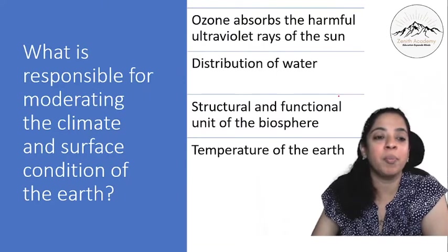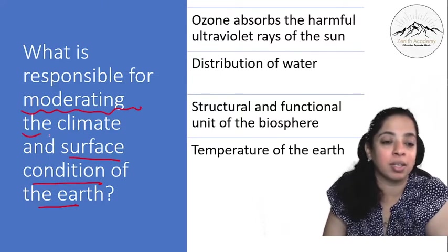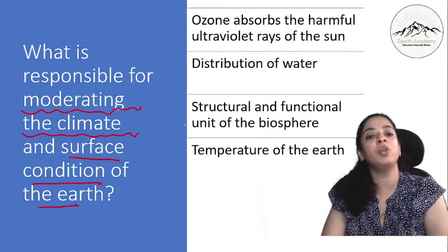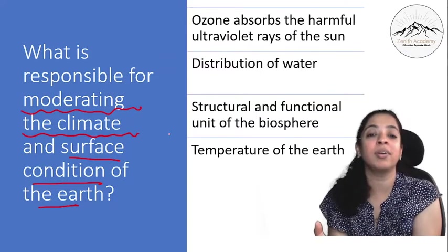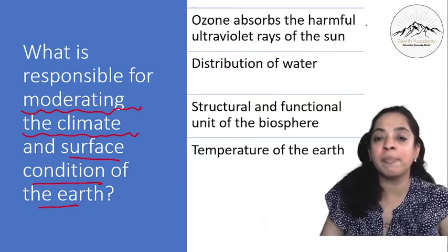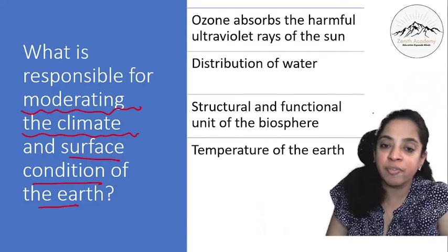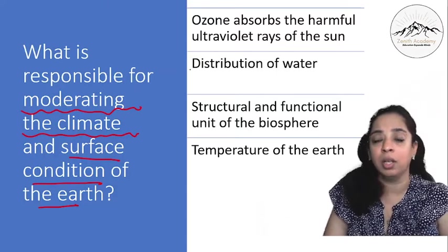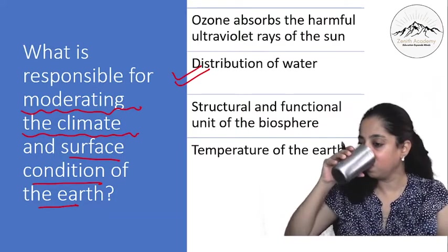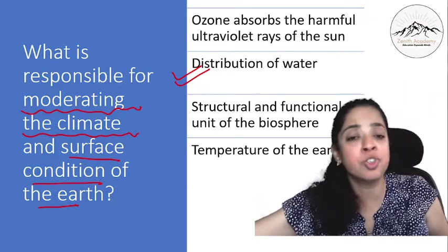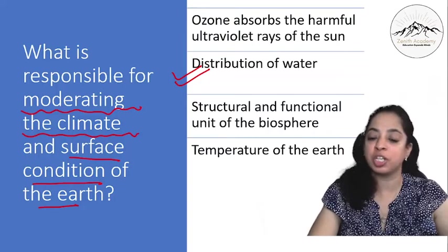Next, what is responsible for moderating the climate and surface condition of the earth? So moderating the climate. In geography, you must have understood that who affects climate moderation the most? Water. So is it ozone absorbs the harmful ultraviolet rays of the sun, or distribution of water, or structural and functional unit of biosphere, or the temperature of the earth? So this is the correct answer. The distribution of water helps in moderating the climate and the surface condition of the earth.